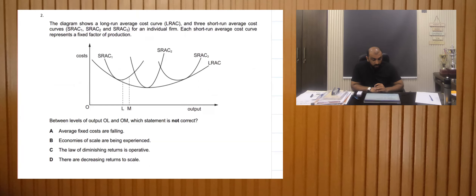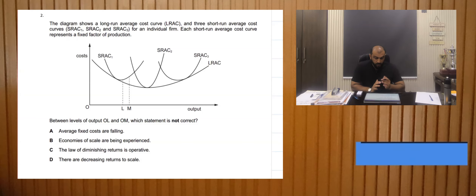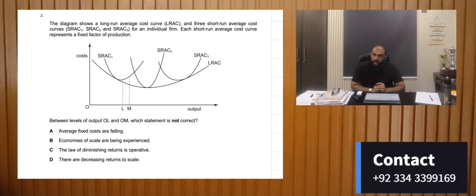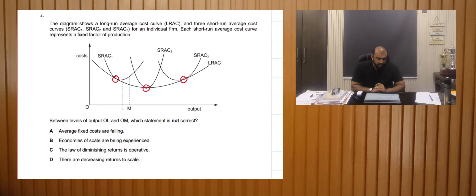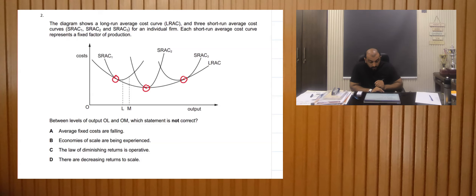The diagram shows the long-run average cost LRAC and three short-run average costs: SRAC1, SRAC2, SRAC3 for individual firms. Each short-run average cost curve represents fixed factors of production. We have three short-run graphs and the lowest points of each are joined to construct a long-term graph between output levels OL and OM. The long-run average cost is decreasing, which means there are economies of scale.